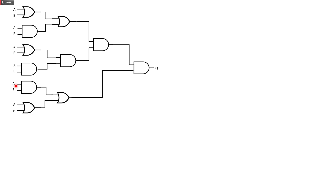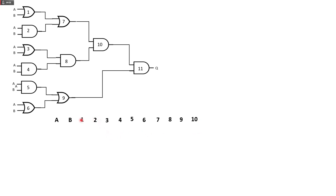There are more gates this time. Ignore the extra letter A — that was a mistake. So first, we write down inputs A and B. Then we count our gates: 1, 2, 3, 4, 5, 6, 7, 8, 9, 10, 11 — so we have 11 gates. We write these numbers down, and determine the possible inputs: 0 and 0, 0 and 1, 1 and 0, and 1 and 1.